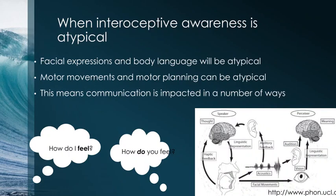If we think about pain — if somebody falls over and hurts themselves but they don't have a sensation of pain because they don't have interoceptive awareness for pain, their body will not portray that they are in pain, even though internally they are suffering. The signals are going from the area of damage to their brain, but they're not interpreting it because they're not noticing it — so they can't respond to it.